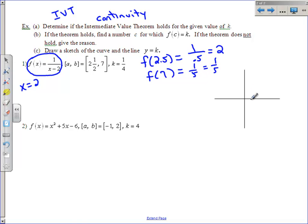So let's see where these values are. I'll put 2.5 right there. I'll put 7 out here. f of 2.5 was up here at 2. This is not drawn to scale. And f of 7 is down here at 1/5. So there we go.